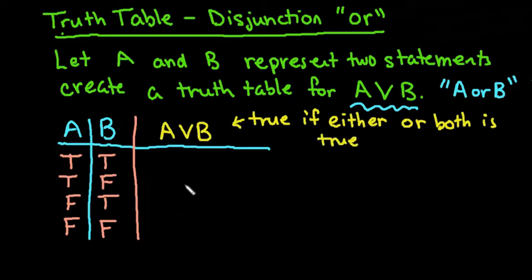So we will assign a value of true if one or the other or both is true. So on the first one, since we have true and true, we would assign true since they are both true. The next one would also be true since the first statement is true, even though the second statement is false since it's or, it's one or the other or both.